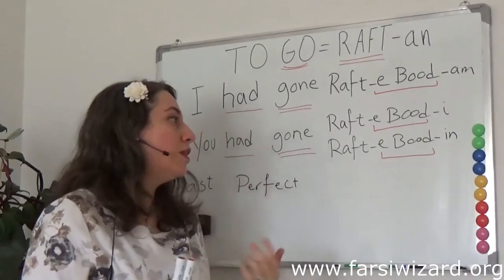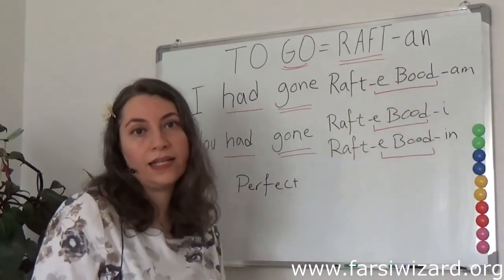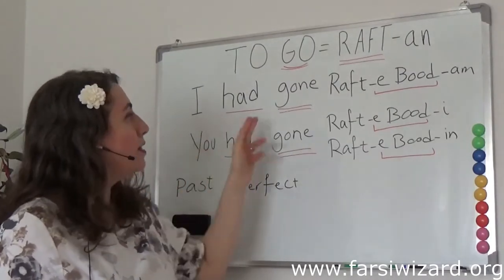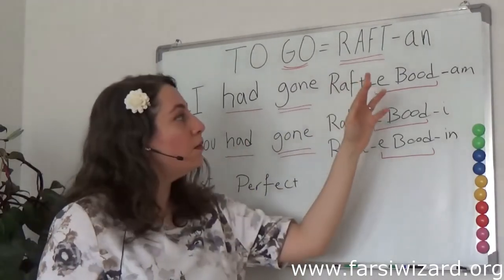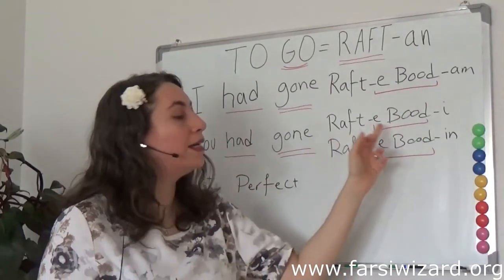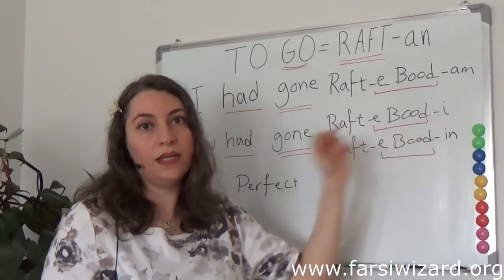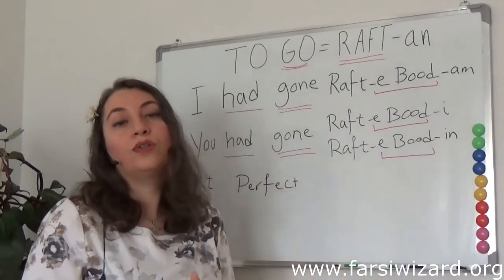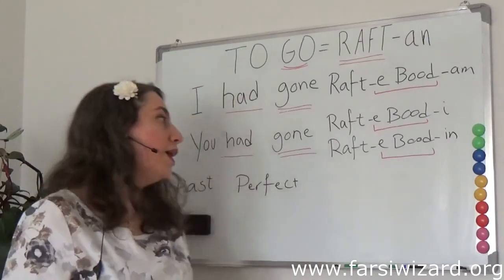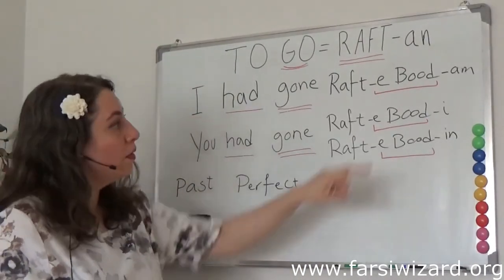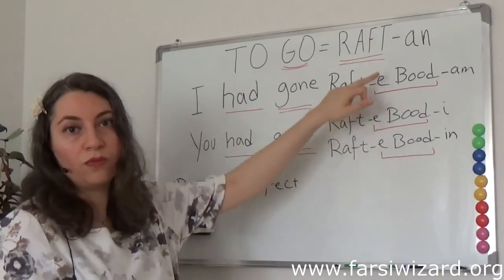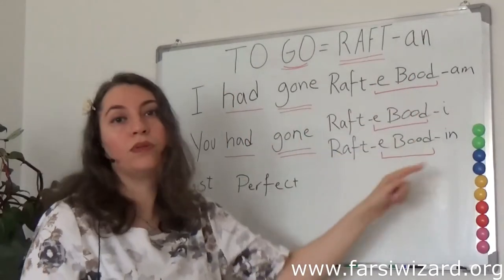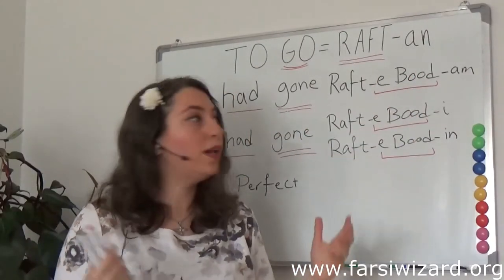I have given enough explanation about how to work with the endings in the previous lessons, so you might want to review those. One more time: 'I had gone' is rafte budam. 'You had gone' is rafte budi if you're talking to a friend, or rafte budin if you're talking to your boss or a group of people. That's past perfect tense — fixed formula, replace the past stem, put the proper ending, and voila, you have your verb.